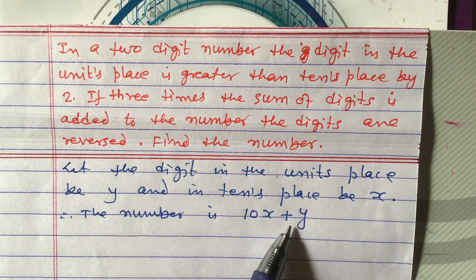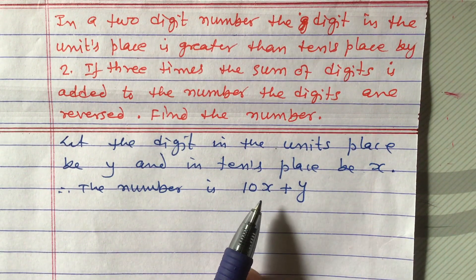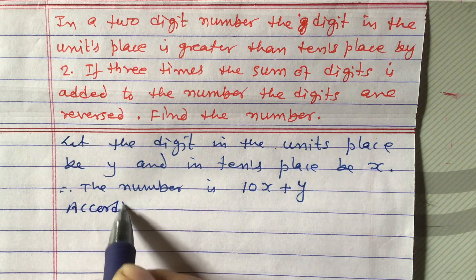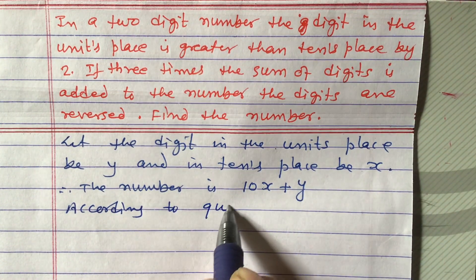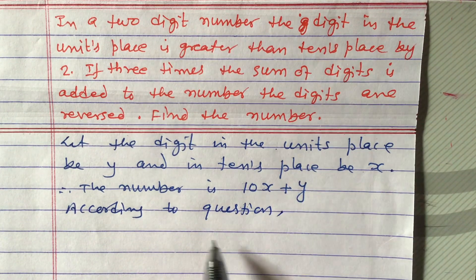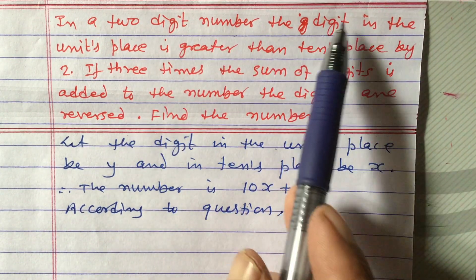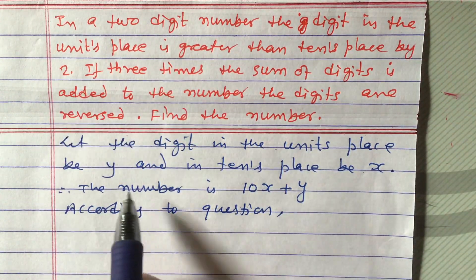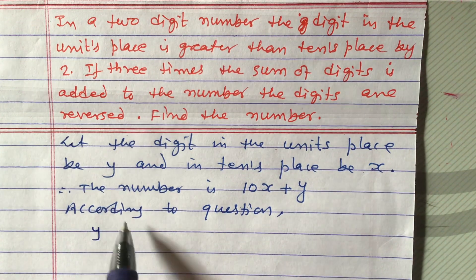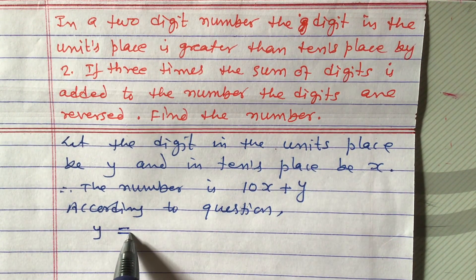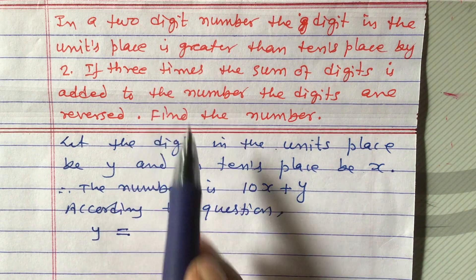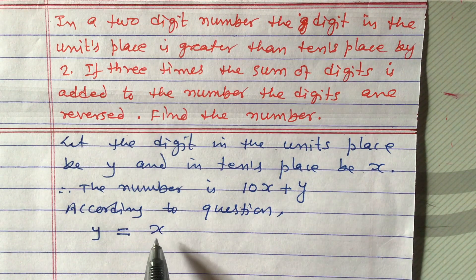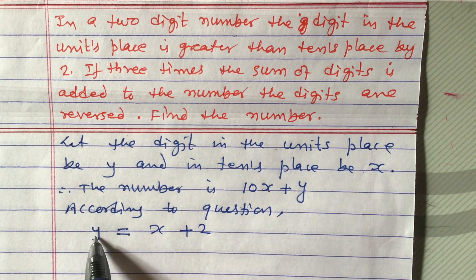Now we will make the equations. According to the first condition: the digit in the units place is greater than the tens place by two. The units digit is y, and the tens digit is x. Since y is bigger and x is smaller, adding 2 to the smaller gives the bigger, so x + 2 = y. This is equation 1.